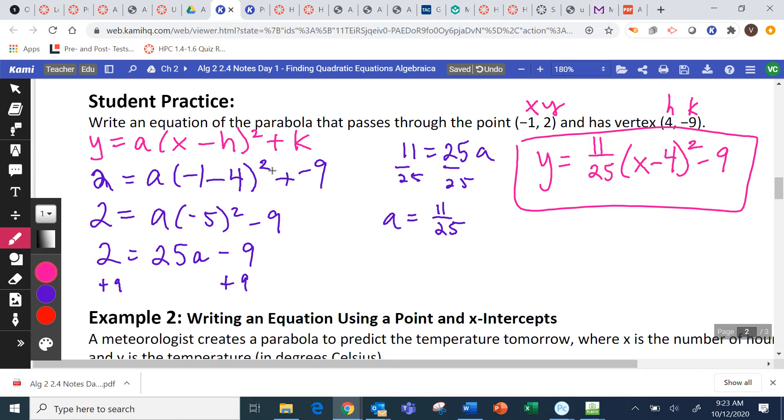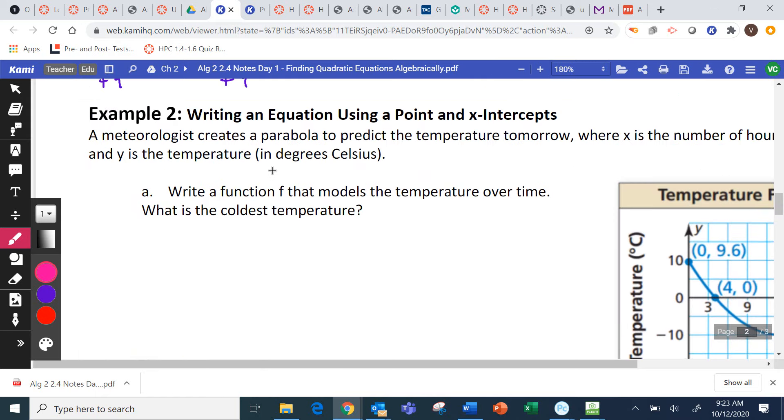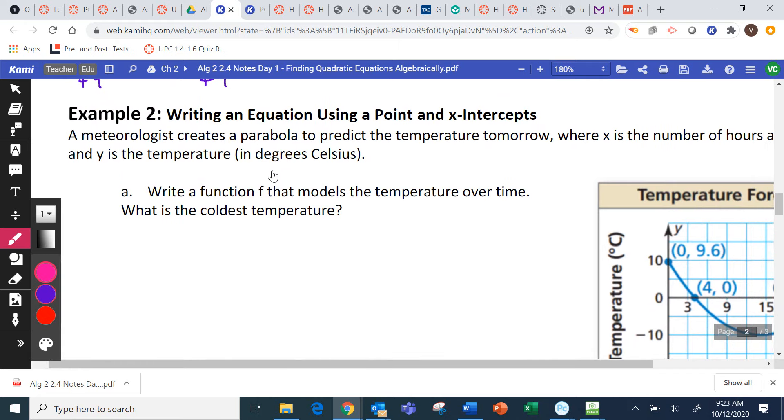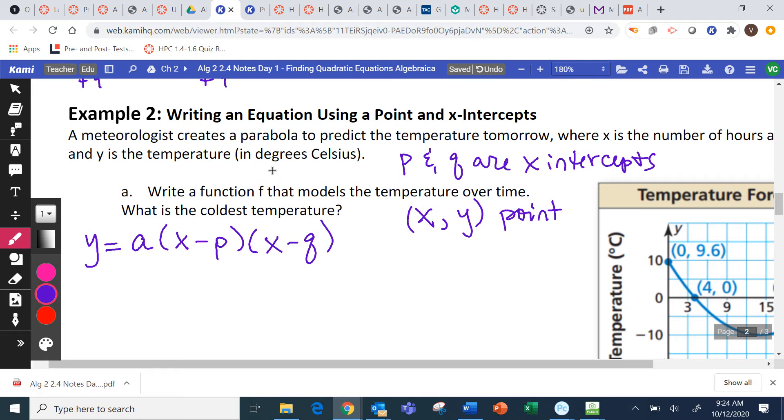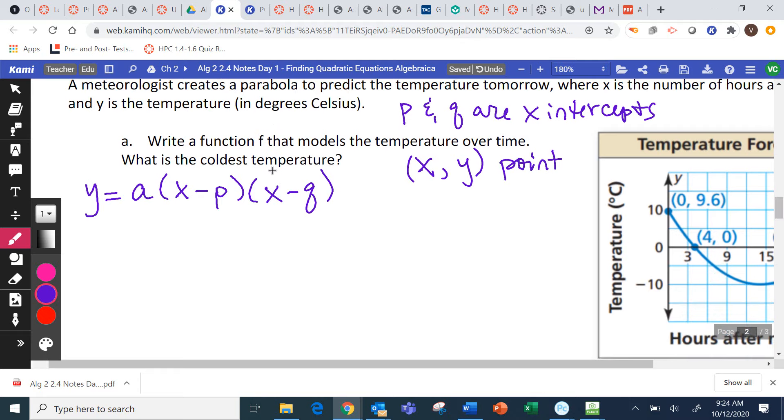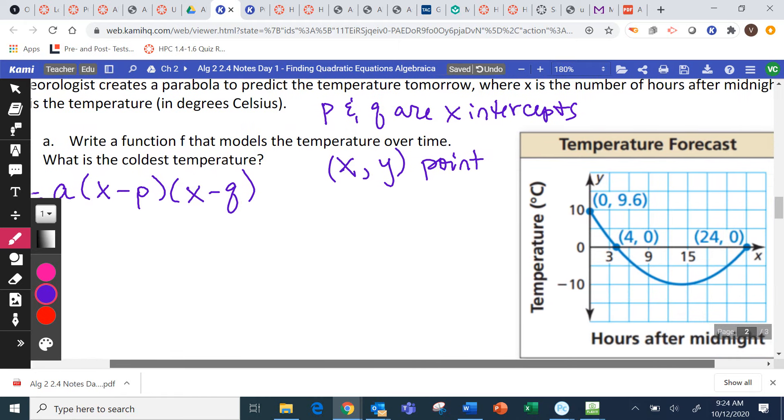So, when you're given the vertex form, you already have almost everything in the vertex form except for that A value, which is why you need another point. Questions? Next example. So, for this one, we're going to write an equation using a point in the X-intercepts. So, we need to know this formula. The formula is Y equals A, and then we have X minus P, X minus Q. P and Q are the X-intercepts. So, X and Y would be the point that's given to us. So, we look at our picture over here. I need P, Q, X, and Y.